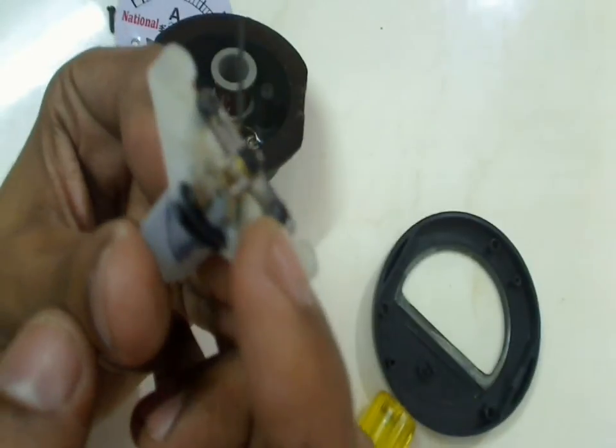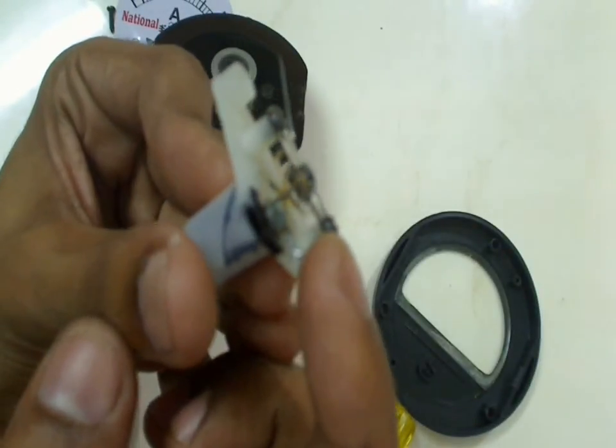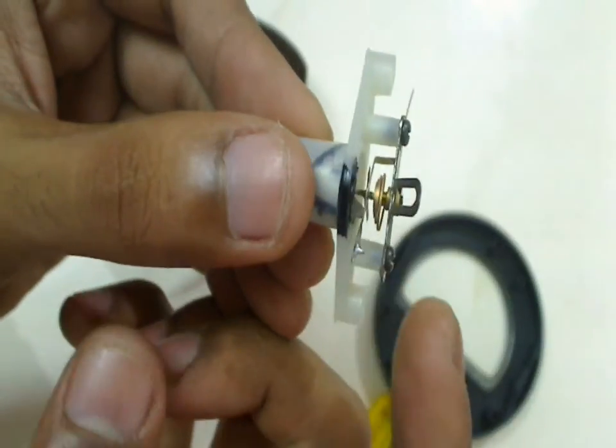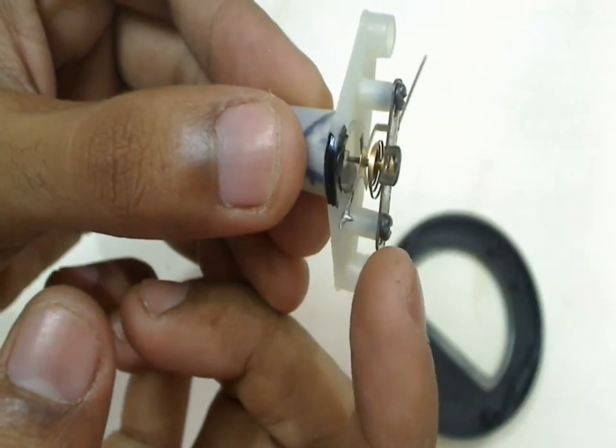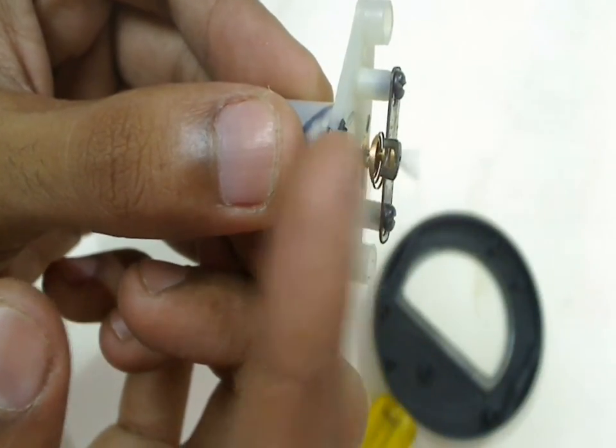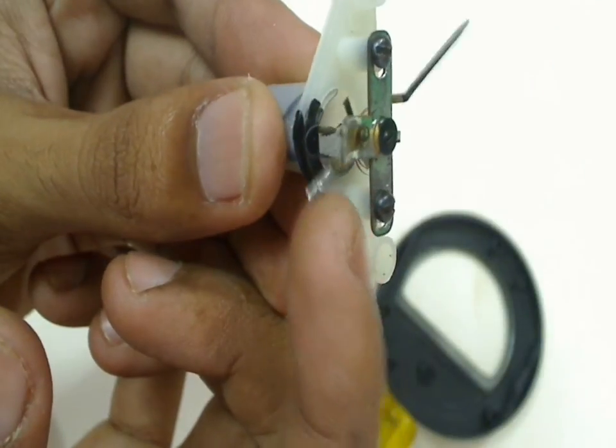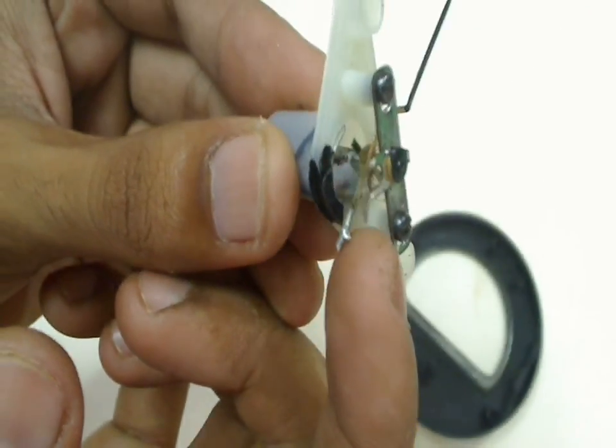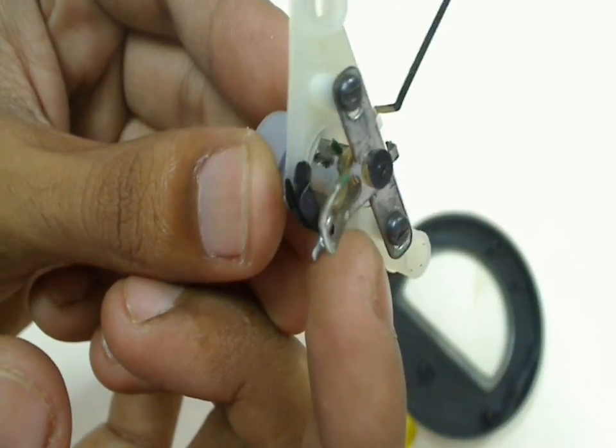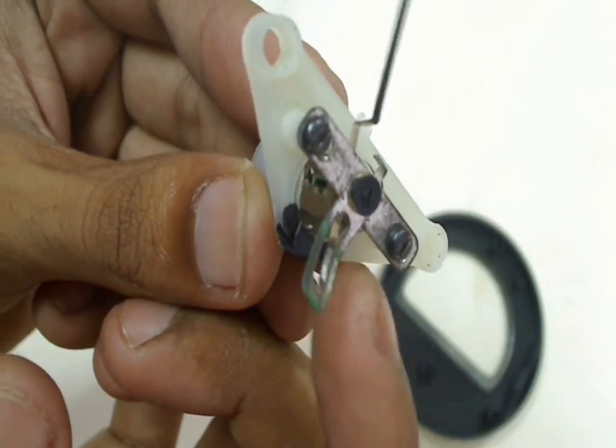There is a small spring here underside of this pointer which actually recoils this pointer back to zero once the current is stopped. And you can see that there is a small metal plate here attached to this pointer. So whenever I turn this pointer that metal plate also is moving.